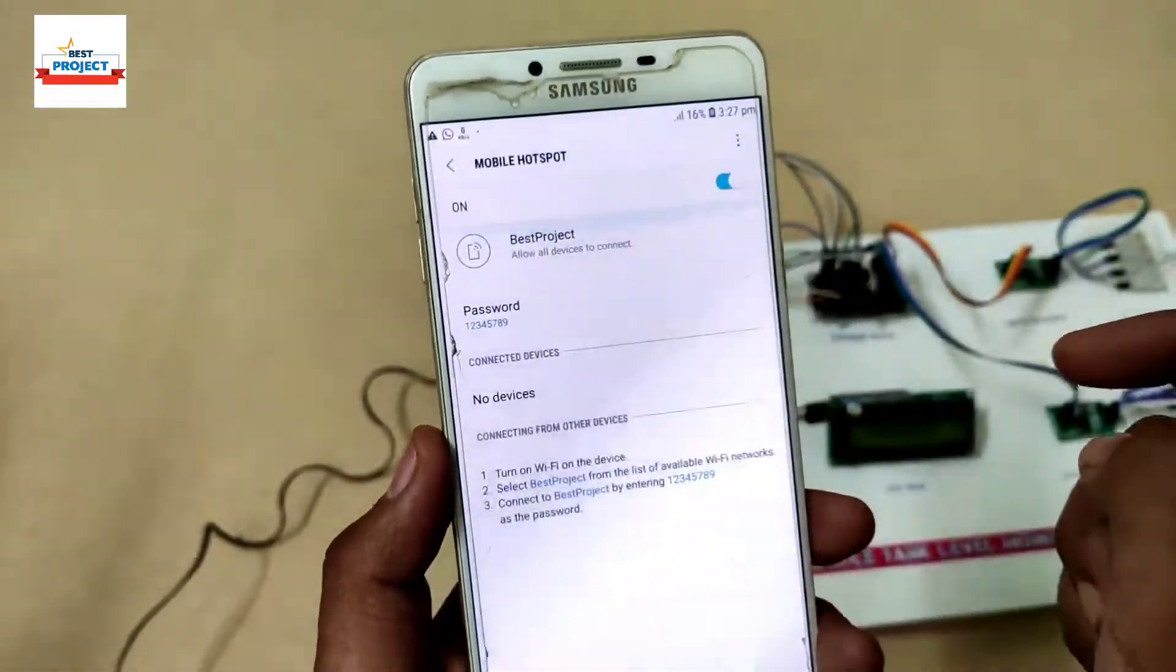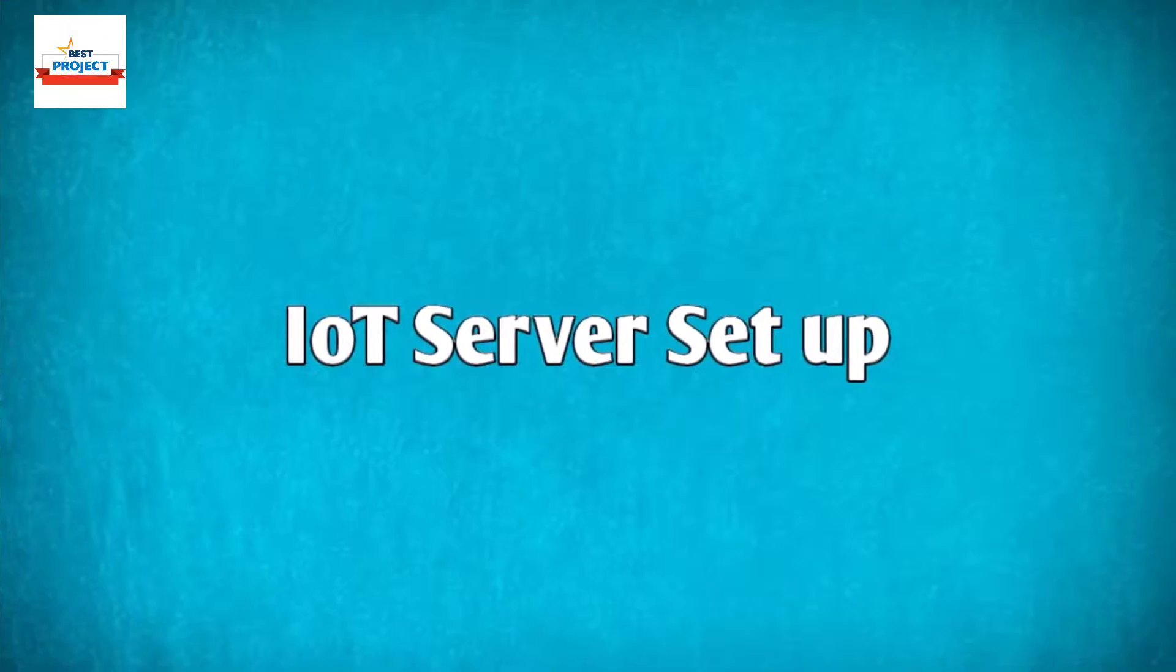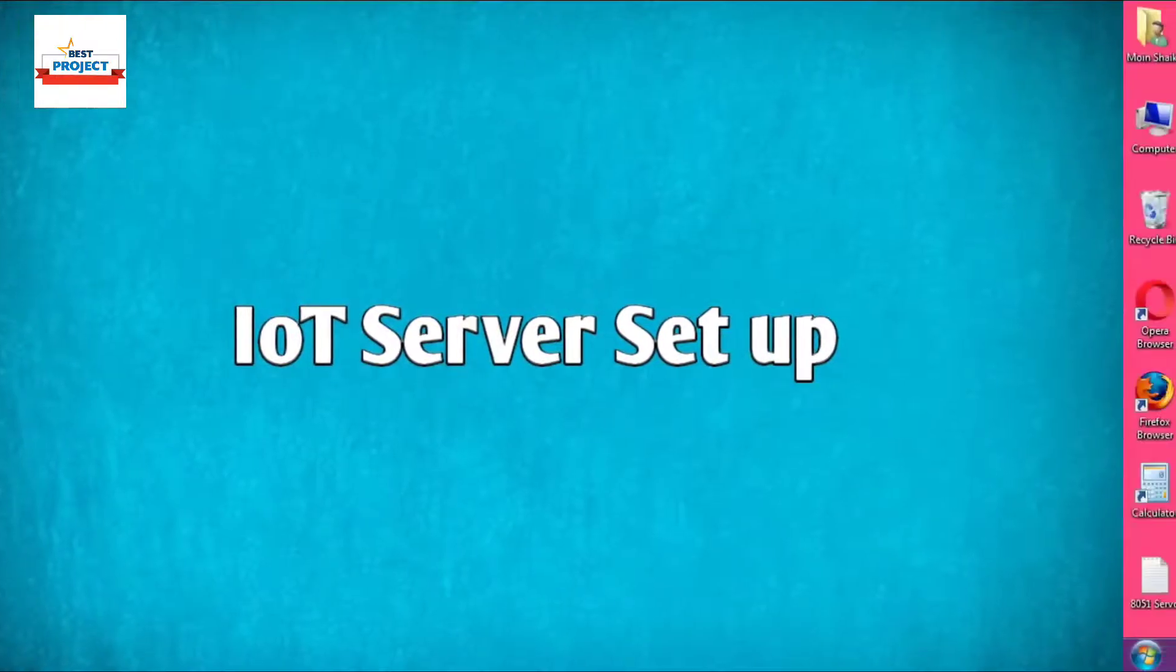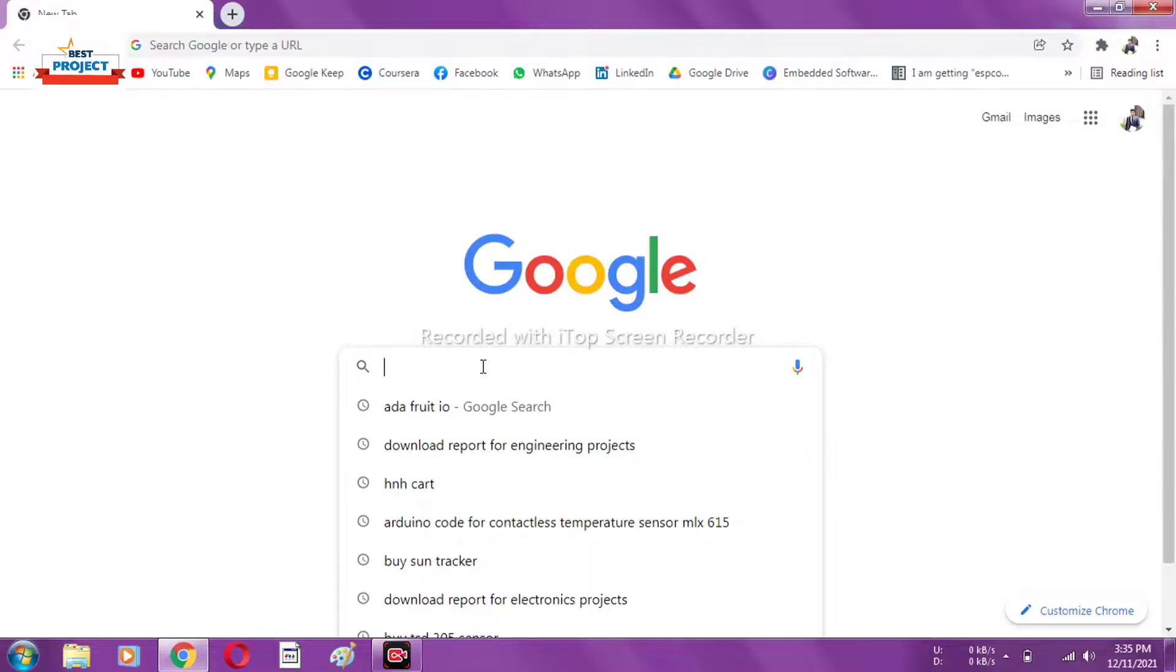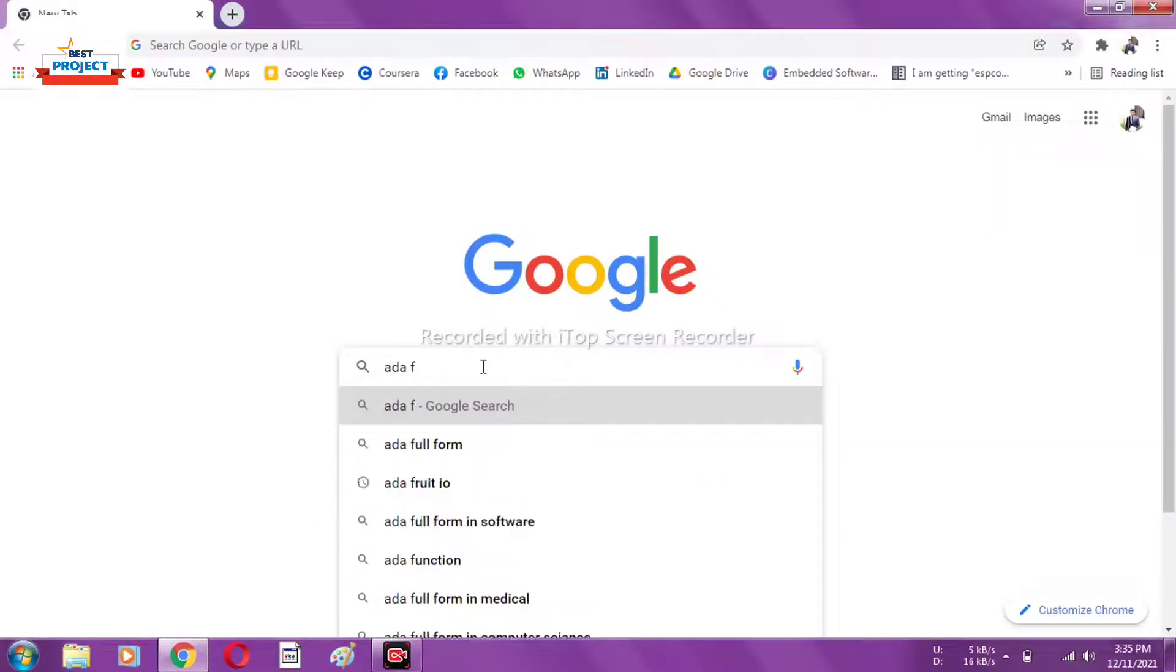After configuring, we'll turn on the hotspot, and then the connected device will show here. Now it's time to visit the IoT server. For this, we'll use a Chrome browser.